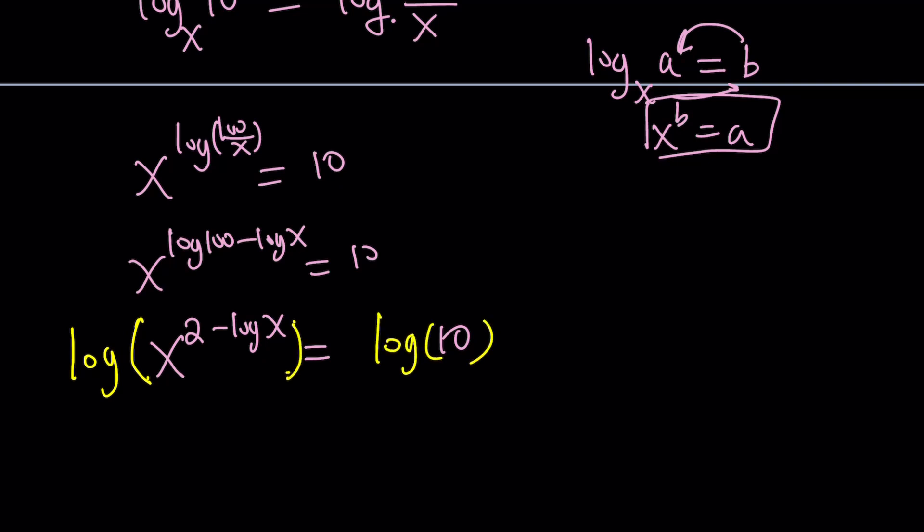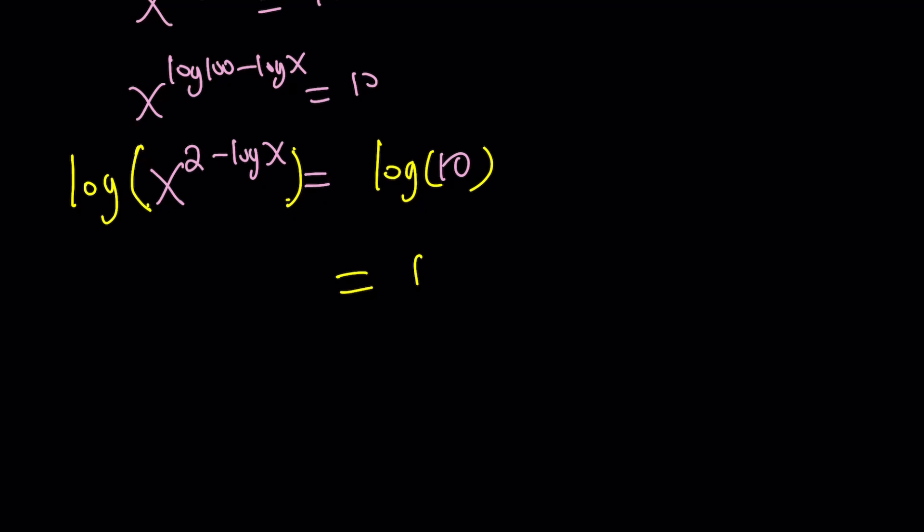Well, you hopefully know that log 10 is 1. So this is 1. And here, we can bring this down and write it as 2 minus log x, and that's going to be multiplied by log x. Awesome.